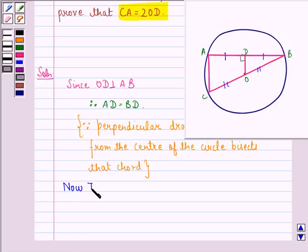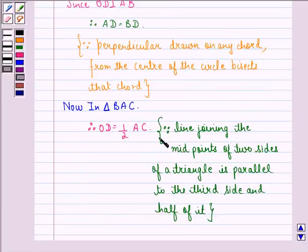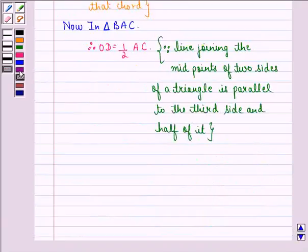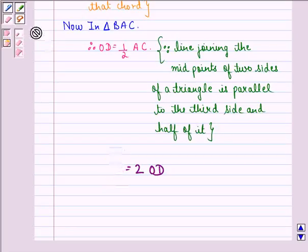Now, in triangle BAC, D and O, they are midpoints of AB and BC respectively. Therefore, OD is equal to half of AC because line joining the midpoints of two sides of a triangle is parallel to the third side and equal to half of it. So we can say that AC is equal to twice of OD or we can say that CA is equal to twice of OD.